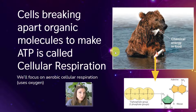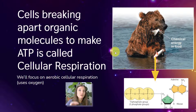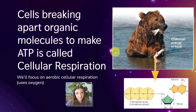We're going to focus first on aerobic cellular respiration — the process of generating ATP in the presence of oxygen. This process requires both oxygen and mitochondria. If either one of those is missing, aerobic cellular respiration will not function.